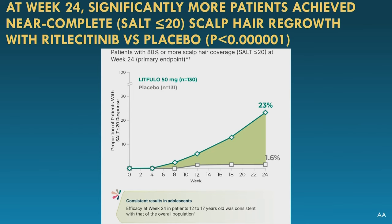An important additional point: the length of time the patient has had their current episode of alopecia areata is critical. Most clinical trials require the last episode to be less than 10 years. If a patient's current episode has lasted more than 10 years, they're likely not going to see a response because the hair follicles have undergone senescence — essentially transitioning from a non-scarring to no-activity state. Take a thorough history of how long the last episode has been going on. The longer it is, the lower the likelihood of success, and if it's truly greater than 10 years, document that and set appropriate expectations.